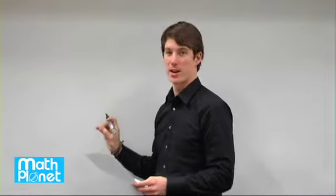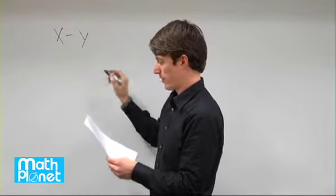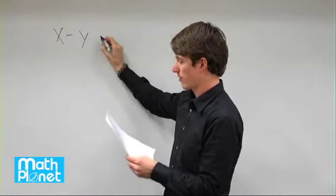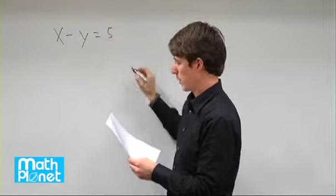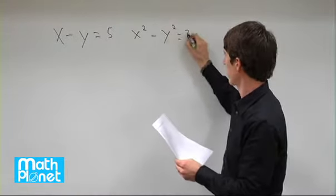In this problem, we have again a system of equations of two equations, and we want to find what x is equal to. So we have x minus y equals 5. We also have x squared minus y squared equals 35.